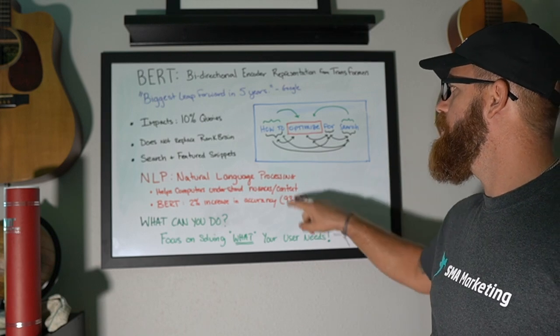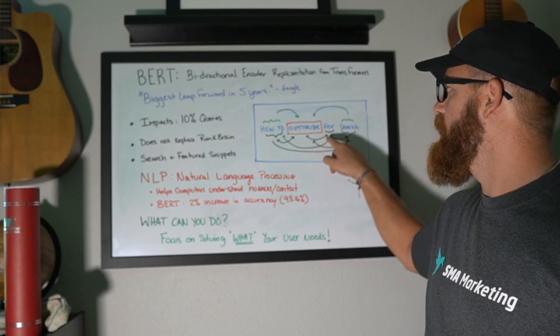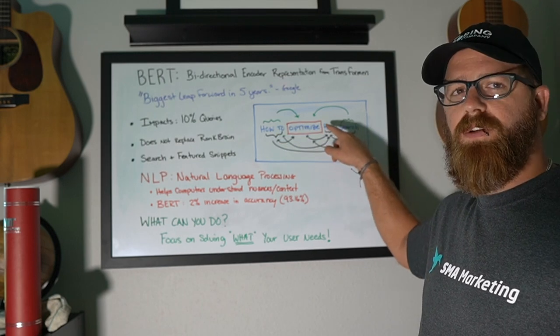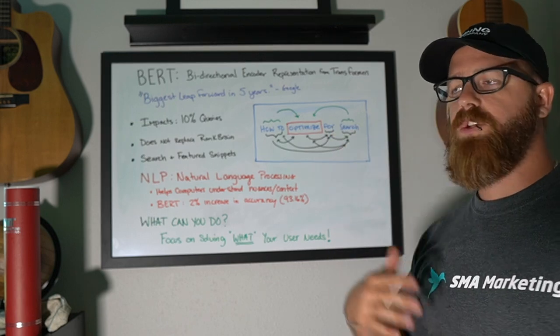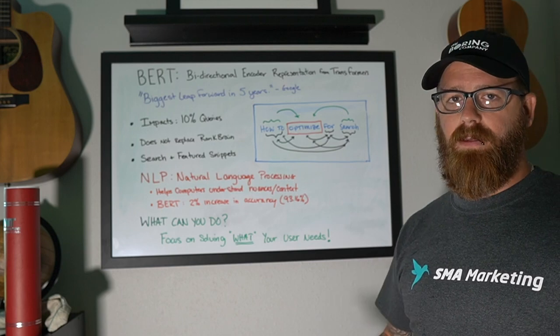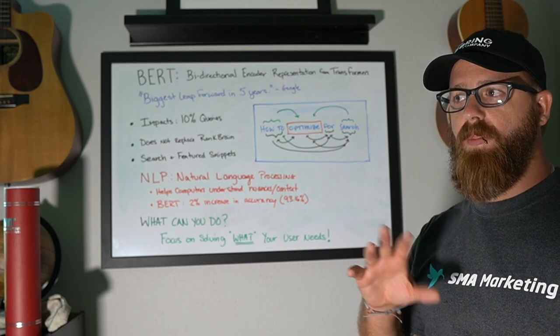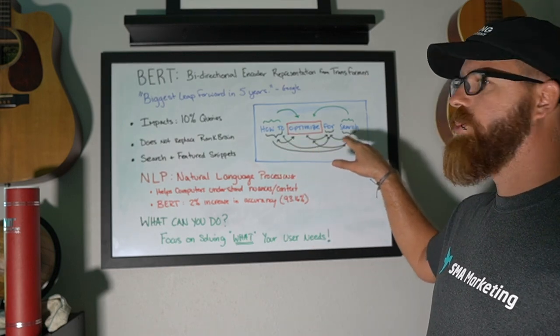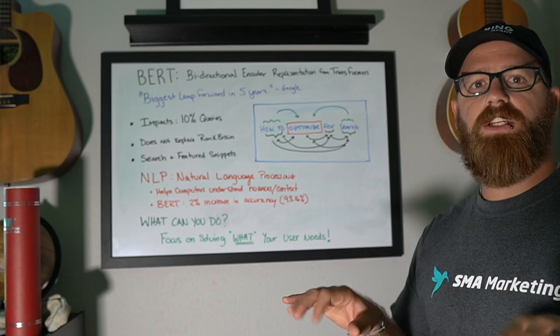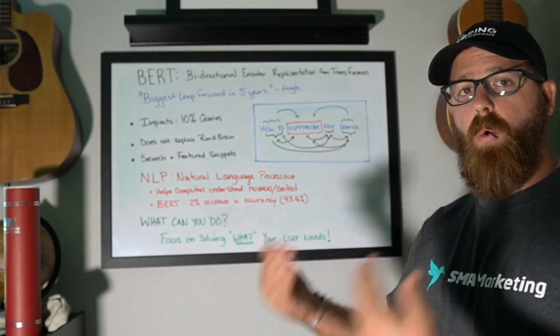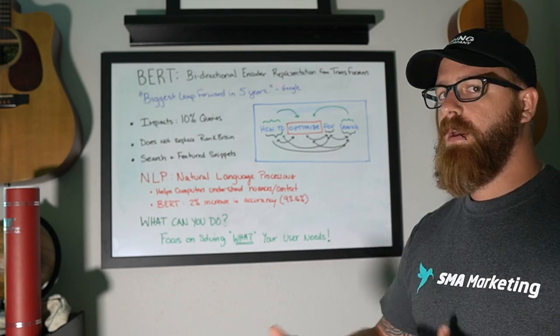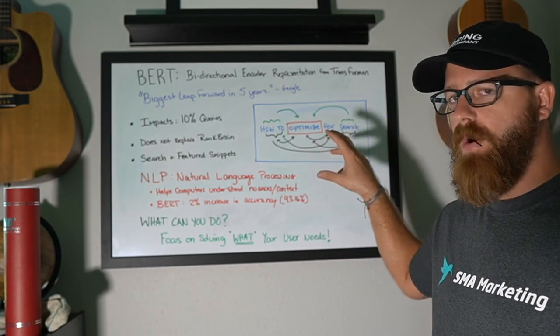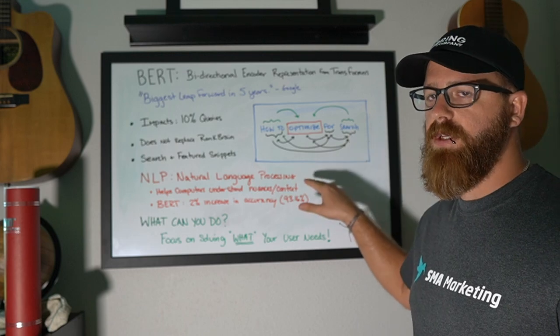Now, what BERT is able to do is build these multi or bi-directional connections between all of these terms. So we're understanding how to, we're understanding the optimize, we're understanding search, but we're also understanding this word here, for. There's things like for and to that are used in the English language that have a ton of weight and they can change how that question is being asked in the results that it should see. So if we did how to optimize to search, like that would be the user, how I can do searching better, right? How to optimize for search. This is how do I optimize for something? That little word changes the meaning of that sentence quite substantially. So with this new BERT algorithm, they're able to better understand those connections.